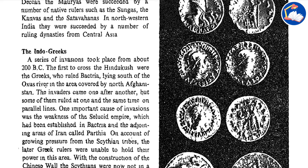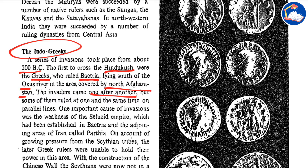The first of these were the Indo-Greeks. A series of invasions took place from about 200 BC. The first to cross the Hindu Kush were the Greeks, who ruled Bactria lying south of the Oxus river in the area covered by northern Afghanistan. The invaders came one after another, but some of them ruled at the same time on parallel lines.